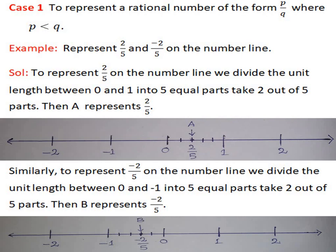Similarly, to represent minus 2 by 5 on the number line, we divide the unit length between 0 and minus 1 into 5 equal parts. Take 2 out of 5 parts, then point B represents minus 2 by 5.